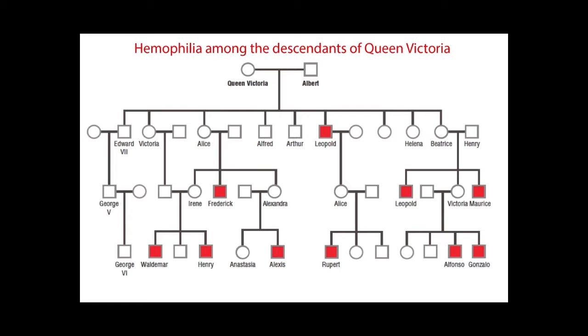You will quickly notice that the disease is observed only in Queen Victoria's male descendants, shown as squares. This indicates that hemophilia is an X-linked condition.